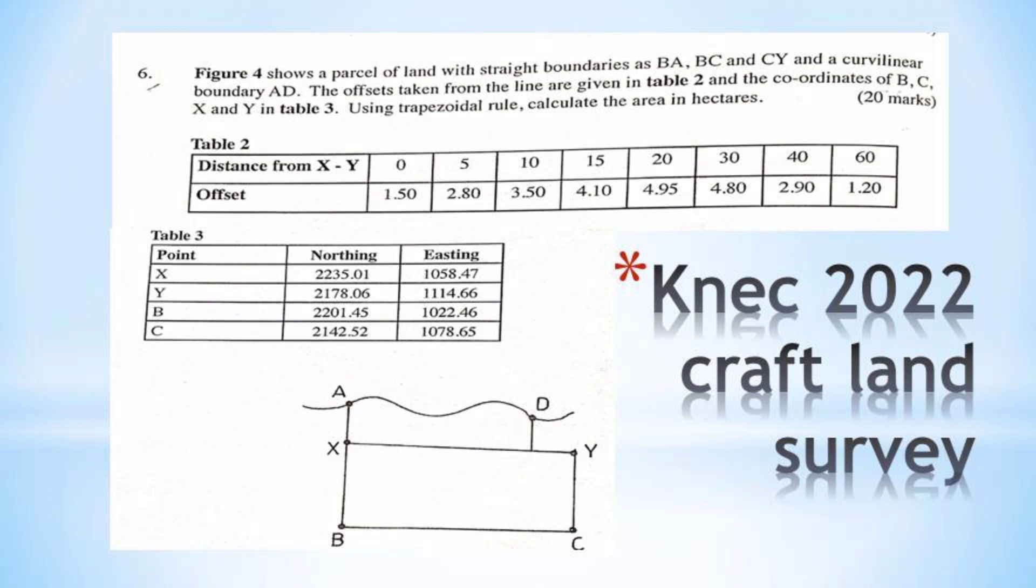First we have to calculate the area of the irregular shape by use of the trapezoidal rule. Referring to Table 2, the distances from X and Y have different intervals, thus we need to treat the areas differently.